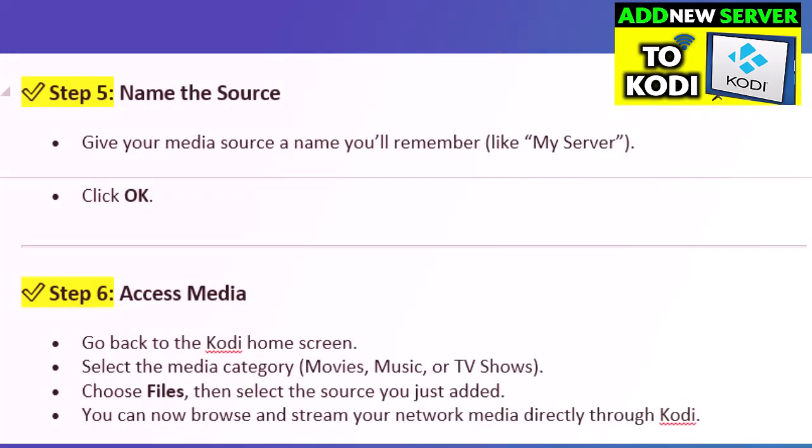Step 5: Name the source. Give your media source a name you'll remember, like 'My Server', then click OK. Step 6: Access media. Go back to the Kodi home screen, select the media category — movies, music, or TV shows — choose Files, then select the source you just added. You can now browse and stream your network media directly through Kodi.